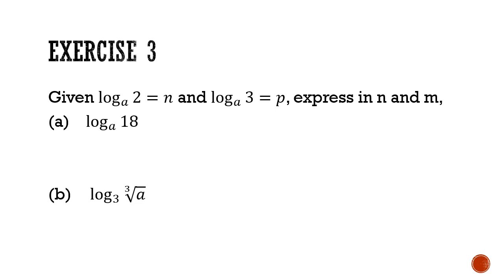So for part a, we will apply the product law. We can convert 18 to 2 times 3 times 3. And that will just be log base a of 2 plus log base a of 3 plus log base a of 3 which is n plus p plus p or n plus 2p.